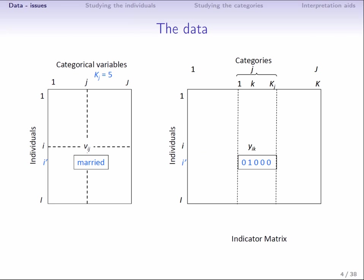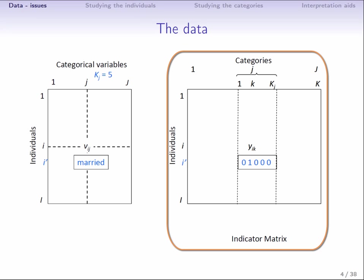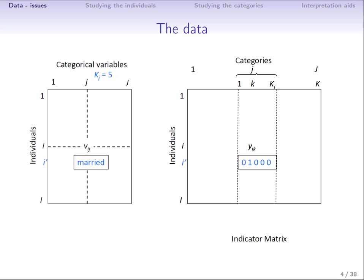Starting from this table, we construct an indicator matrix called the complete disjunctive table, or CDT. In this indicator matrix, rows are individuals, but now the columns are the categories of the qualitative variables. So, if the J's column of the original table has KJ categories, there will be KJ columns for this variable in the indicator matrix, each corresponding to one category of the J's variable. The entry at the intersection of the I's column, which we call YIK, will be equal to one if the I's individual has category K of the J's variable and zero otherwise.